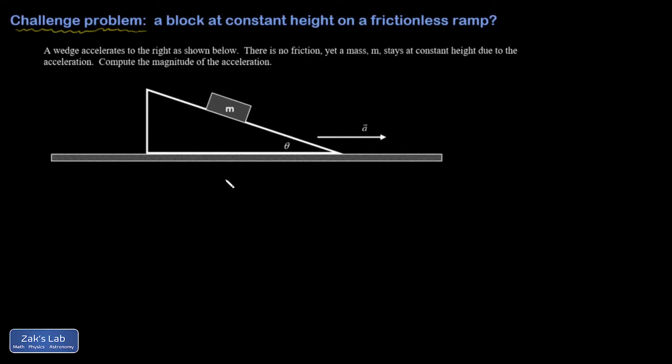So to understand this physically, before I even start writing down coordinate axes and vectors, why should this even be possible? The way I think of it is, what if you shot this ramp really fast with just an absolutely enormous acceleration to the right? I think your physical intuition tells you this mass is going to slide upward and pop off the back of the ramp. And so if you had just the right acceleration, we should be able to keep this thing at exactly the same height.